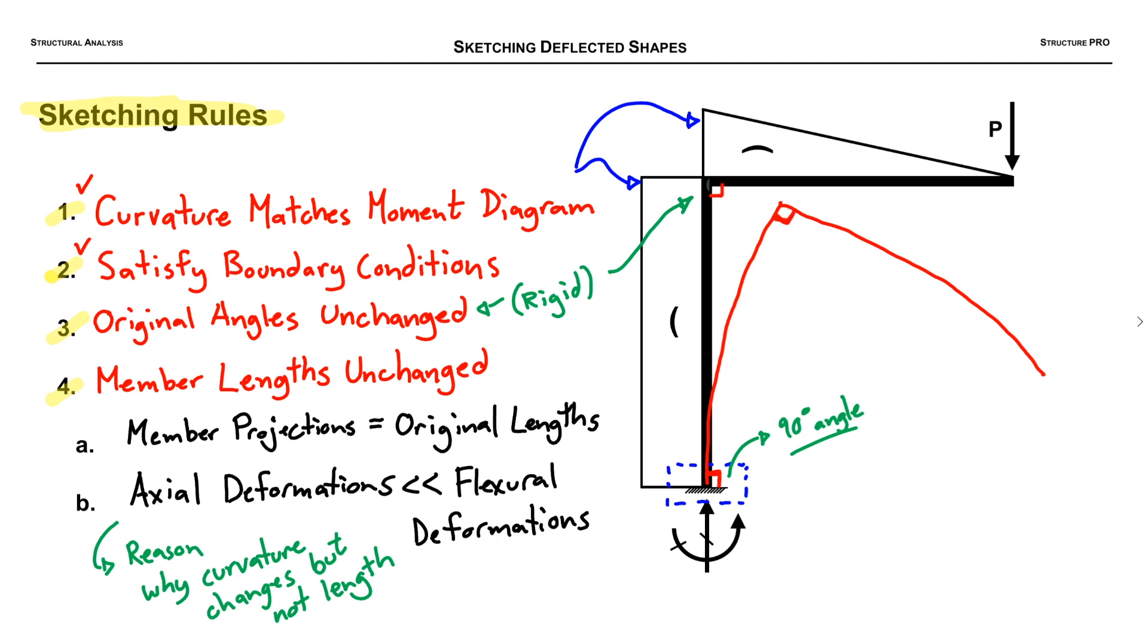Last comes probably the trickiest rule. The member lengths need to remain unchanged. So if we look at this initial column here it got significantly shorter and that can't be the case. So let's redraw it stretching all the way up to the same level as the original member and then we have to redraw the second member here stretching the length equal to the length of the second member.